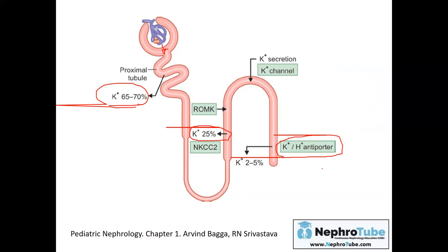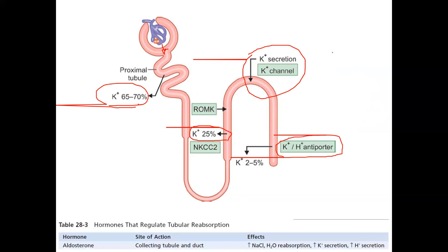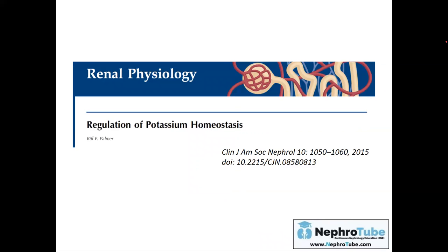In the distal part of the nephron, the main site and regulator for potassium excretion is through the effect of aldosterone. Aldosterone acting on the distal tubule increases potassium secretion — causing hypokalemia if levels are high — increases hydrogen secretion causing metabolic alkalosis, and increases sodium and water reabsorption, potentially causing hypertension. I recommend reading a review article on regulation of potassium homeostasis for more details.